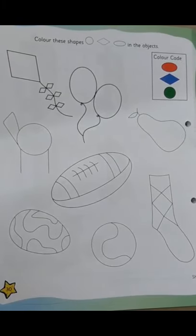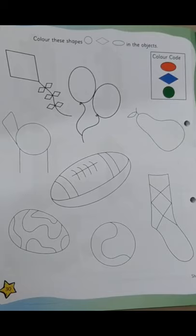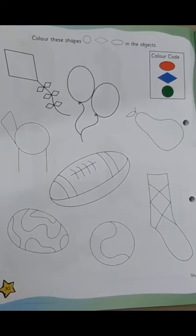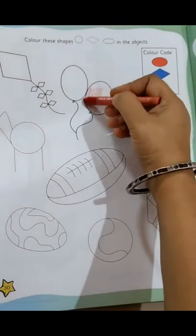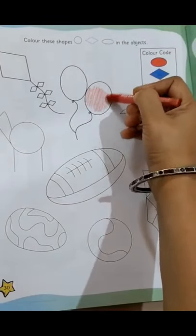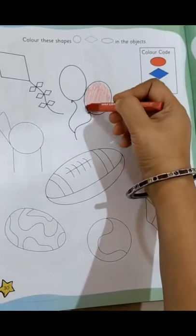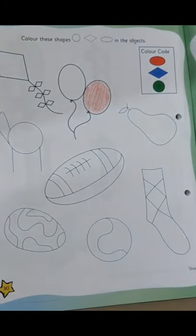So, now if you see, we are going to color it. Yes, the first is an oval. Can you see these balloons which are oval in shape? We are going to color it red. Right? Yes, in one direction only you will color. Nothing should go outside. Yes, one balloon. You can color the next.